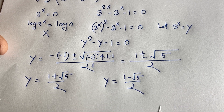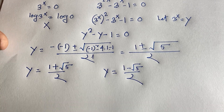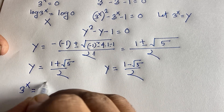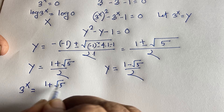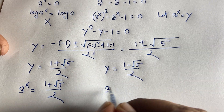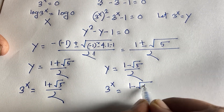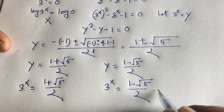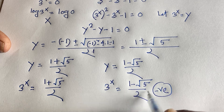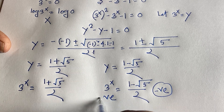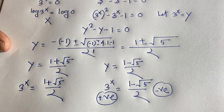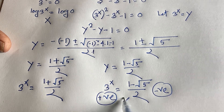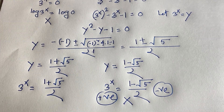Recalling that y equals 3 to the power x, we substitute back: 3 to the power x equals (1 plus square root of 5) over 2, or 3 to the power x equals (1 minus square root of 5) over 2. The second value is always negative, but 3 to the power x is always positive, so a negative value cannot equal a positive one — that solution is rejected.